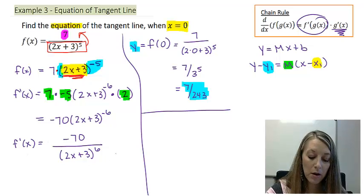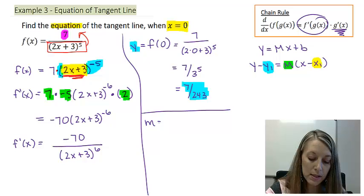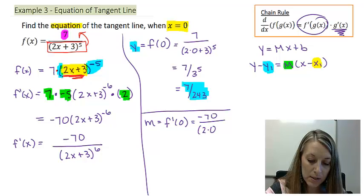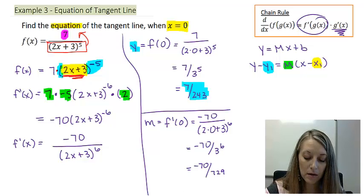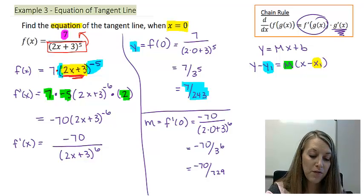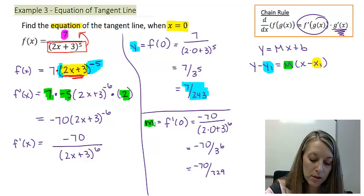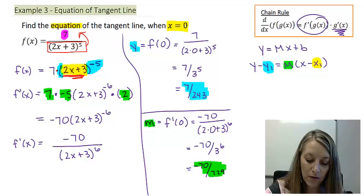Now I use the derivative to find my slope value. Slope equals f prime of 0, so that gives me negative 70 over (2 times 0 plus 3) to the sixth, which is negative 70 over 3 to the sixth, or negative 70 over 729. That does not simplify, so that's what substitutes in for my slope.